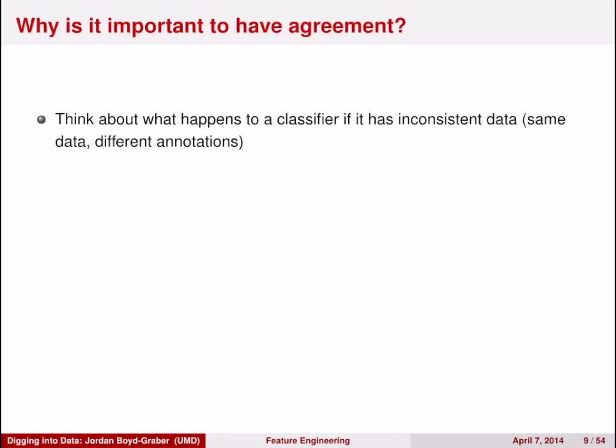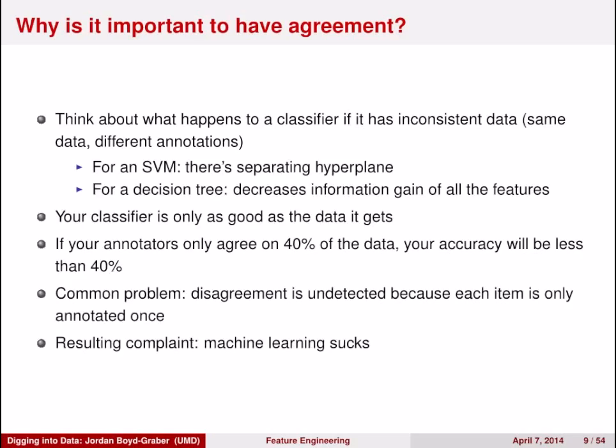Why do we need annotations to agree with each other? Think about what happens to a classifier if it has inconsistent data — very similar data and features but different annotations. For an SVM, the hyperplane that separates very similar data will have a very small margin, and that'll be bad. For a decision tree, you'll have less gain obtainable from the data because the features look so similar. The bottom line is your classifier is only as good as the data it gets.